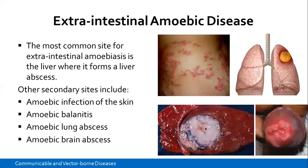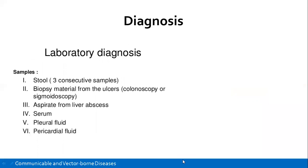We can have extra-luminal or extra-intestinal amoebic disease, where secondary sites are involved. Apart from the liver, we can have amoebic infection of the skin — where Entamoeba histolytica has gone to the skin — as well as balanitis of the glans penis, amoebic lung abscess, and even brain involvement.